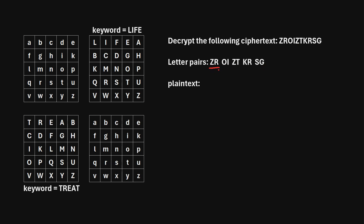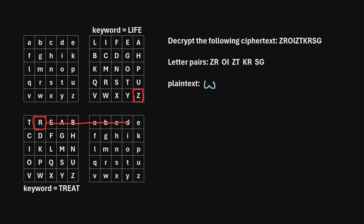The first pair is ZR. We identify the first letter Z in the top right square — here's Z. Then we identify the second letter R in the bottom left square — here's R. Then we find where they intersect in the top left square. Drawing some lines, we can see they intersect at the lowercase w, so that will be the first letter in our plaintext. Then we find where they intersect in the bottom right square. Drawing some lines there, we see they intersect at a lowercase e — so that's the next letter in our plaintext.